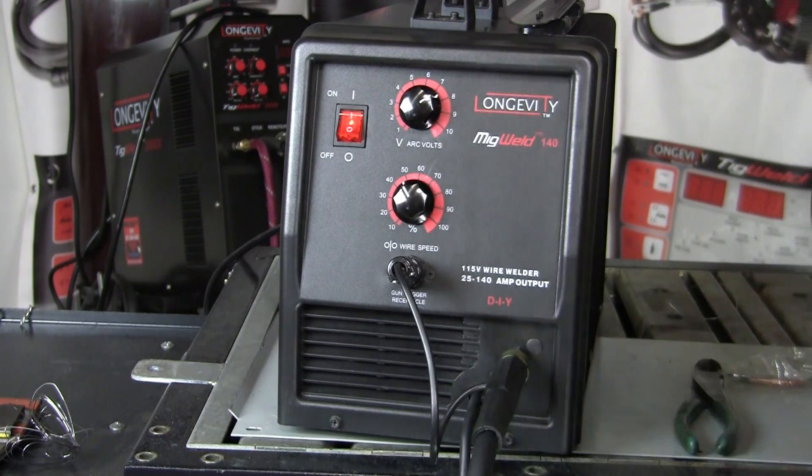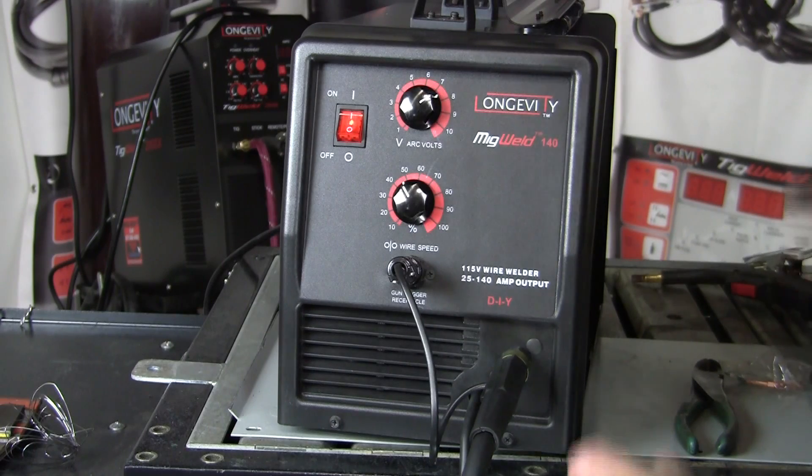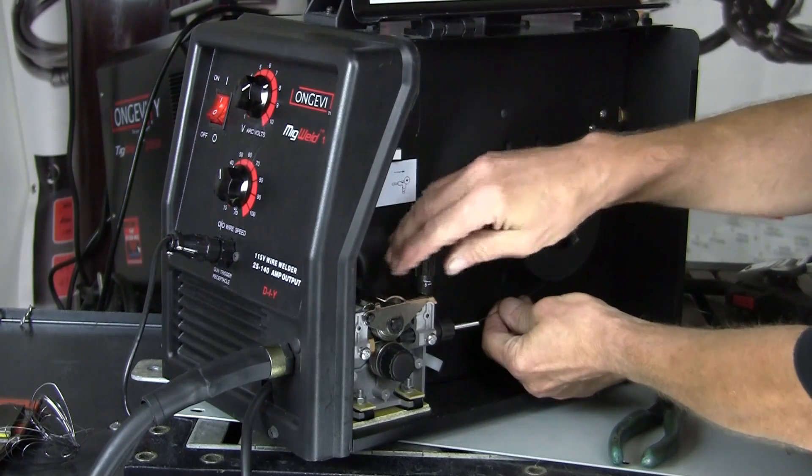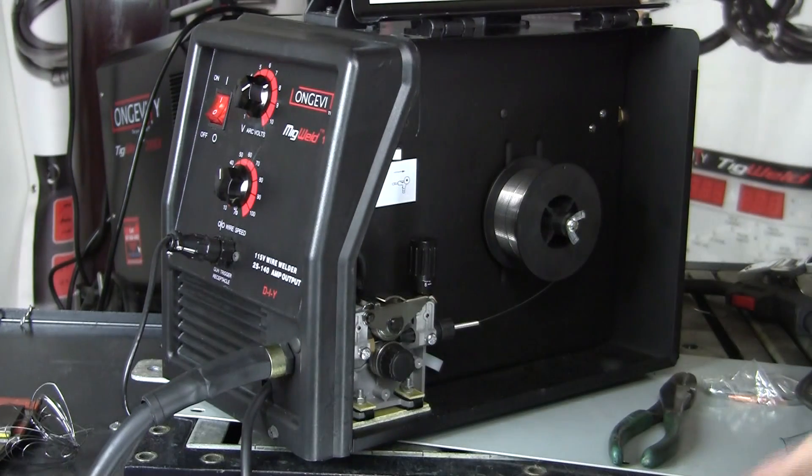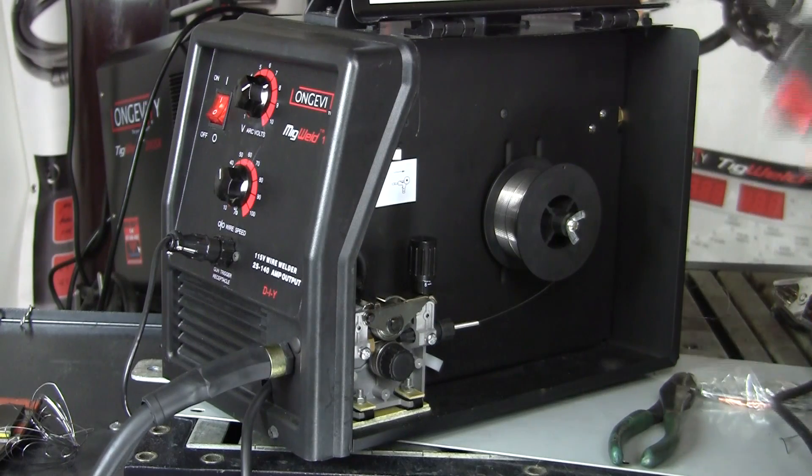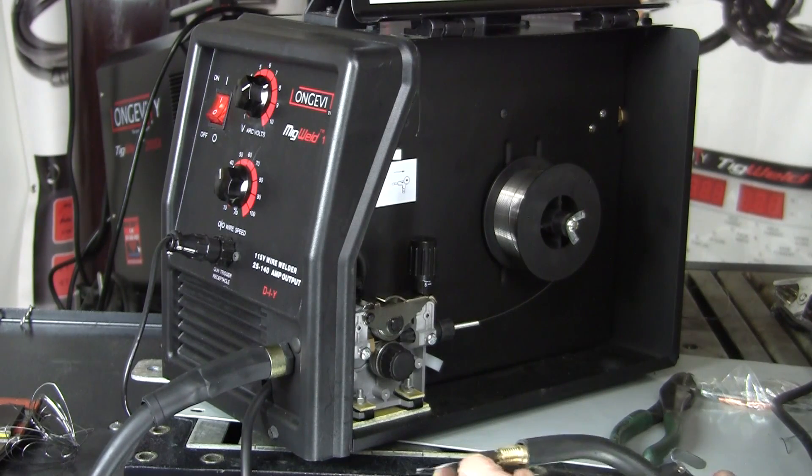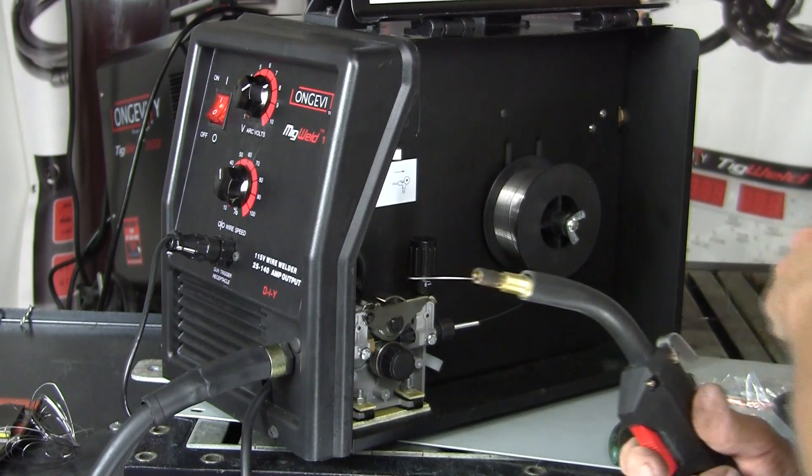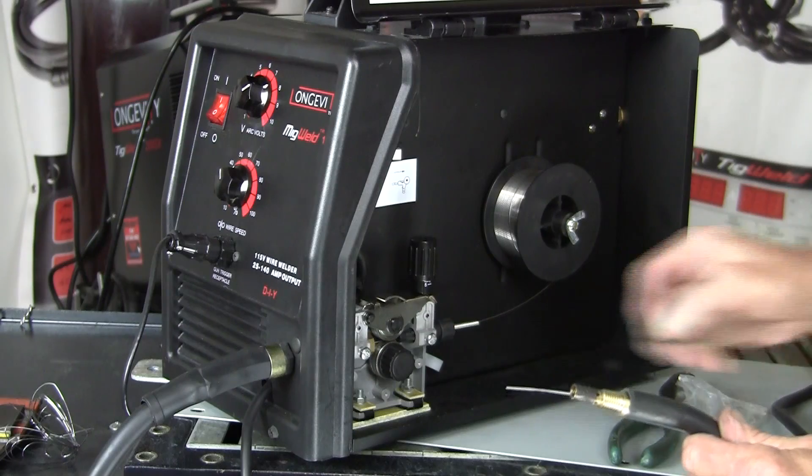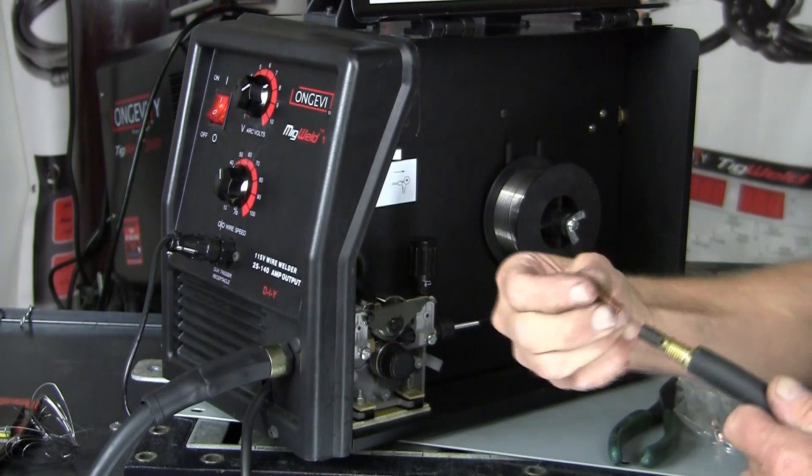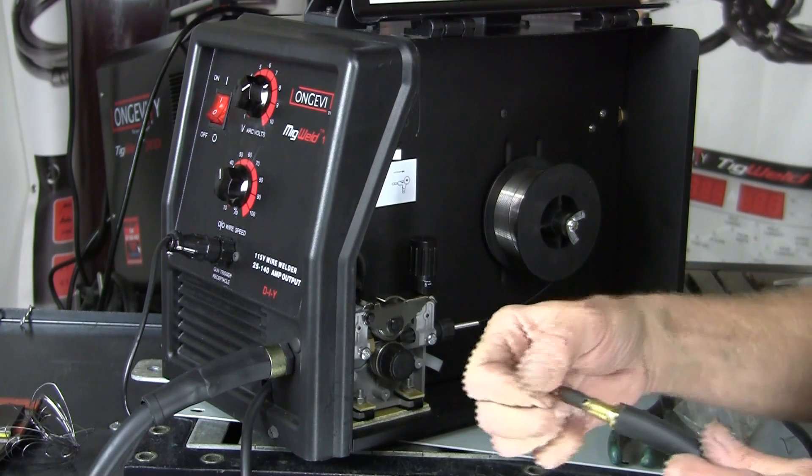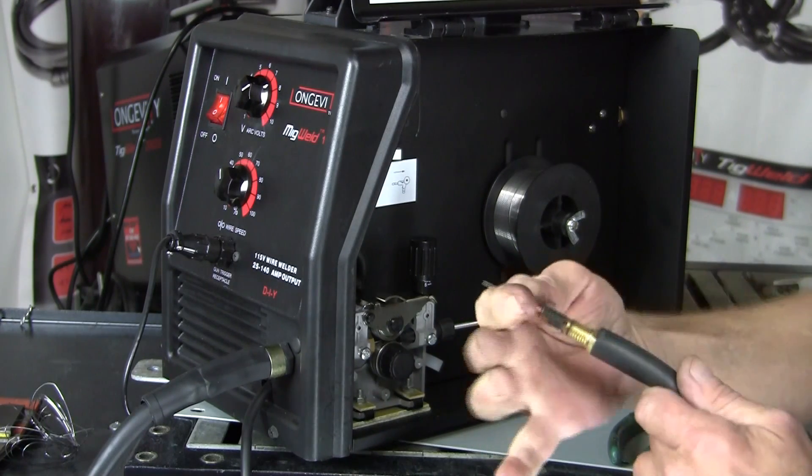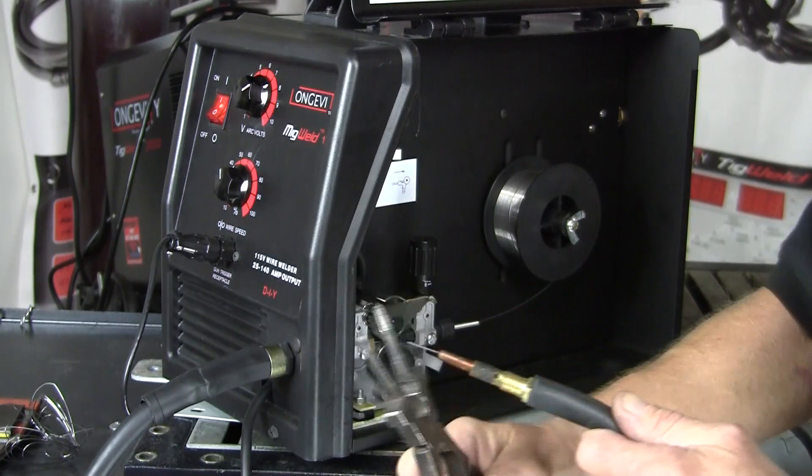We're going to put the spool in. The spool is already in, so what we're going to do is thread it in, let it run through the wire until it comes out of the gun just like that. You want to keep a little length on that wire outside the gun. Then we'll take our tip, put our tip on, tighten this up. Finger tight at first, take our pliers.